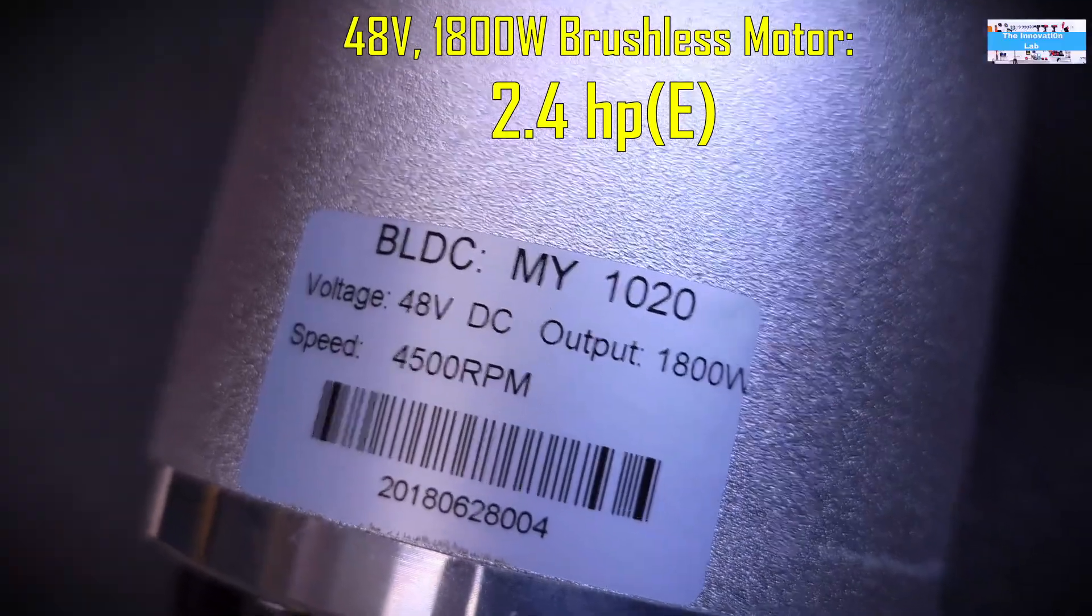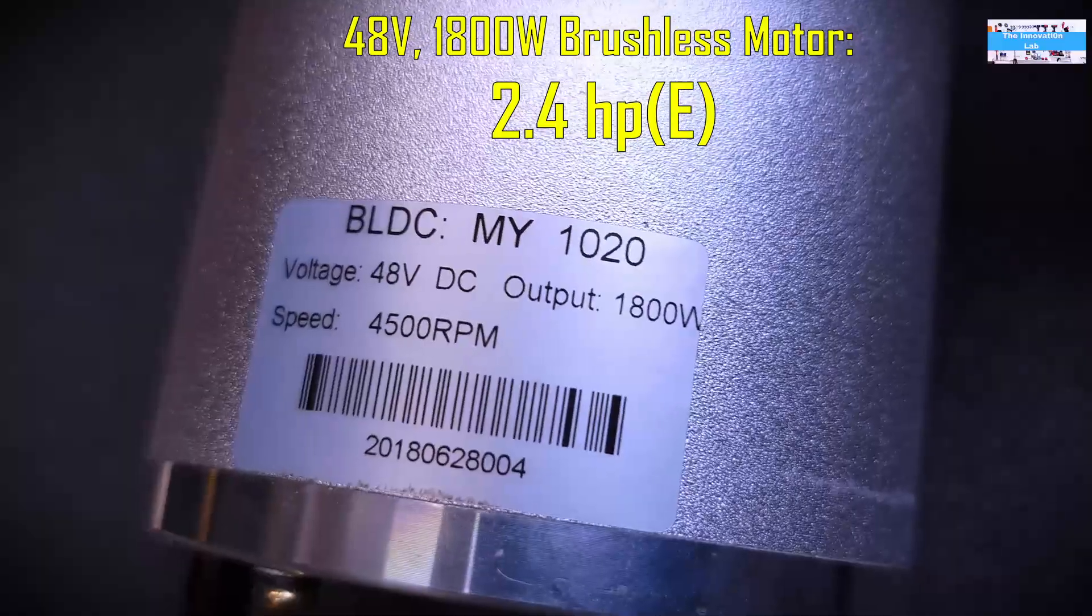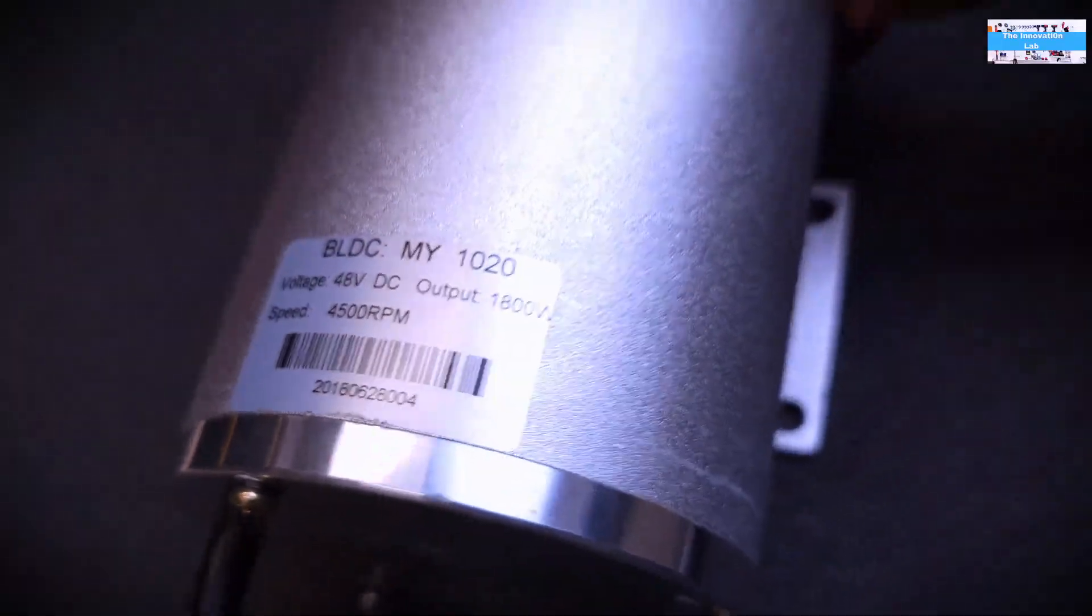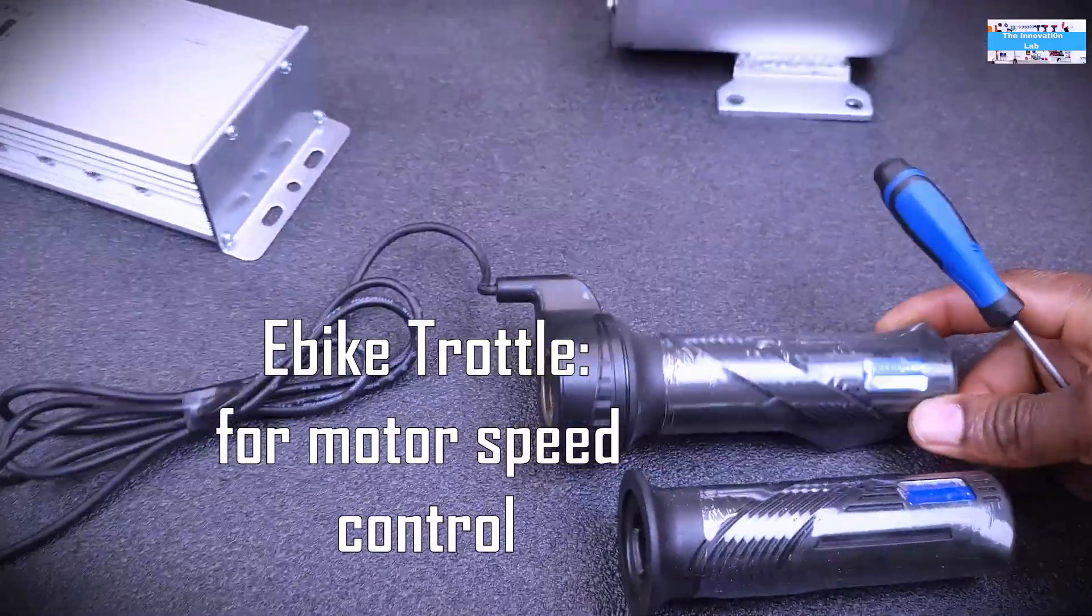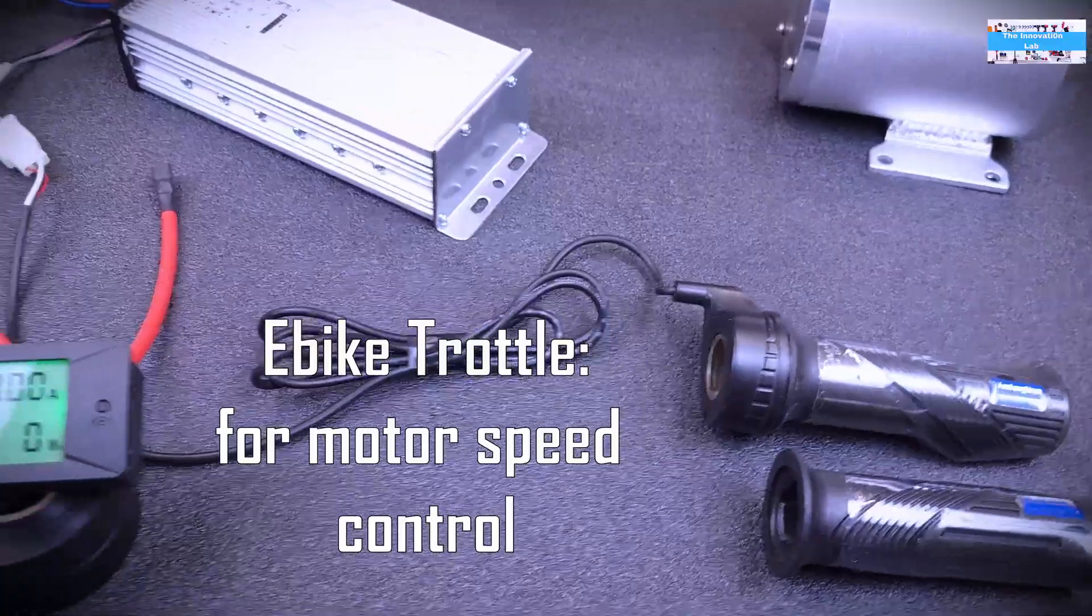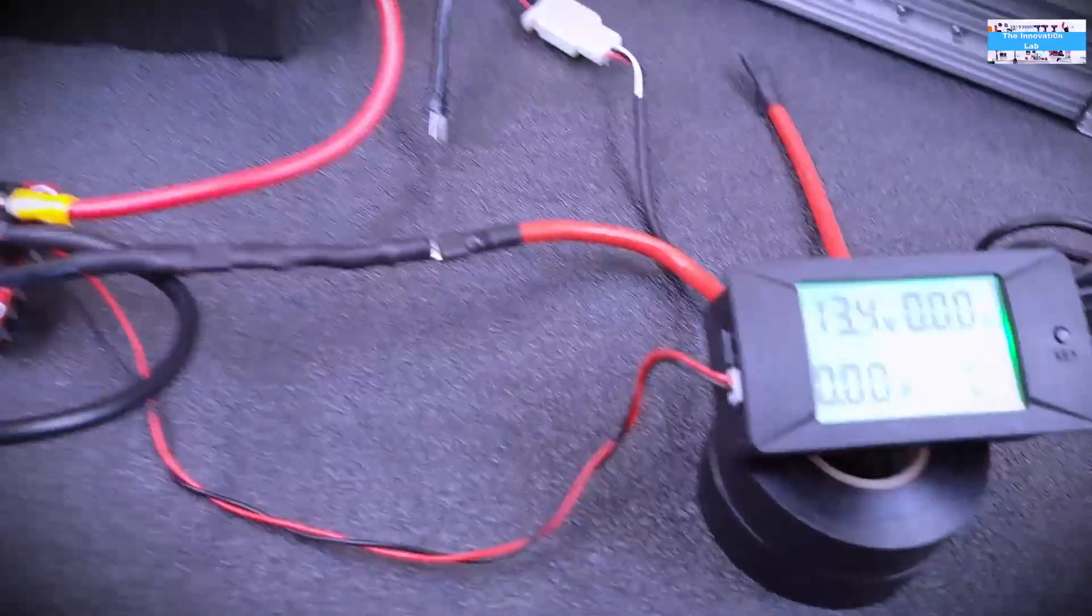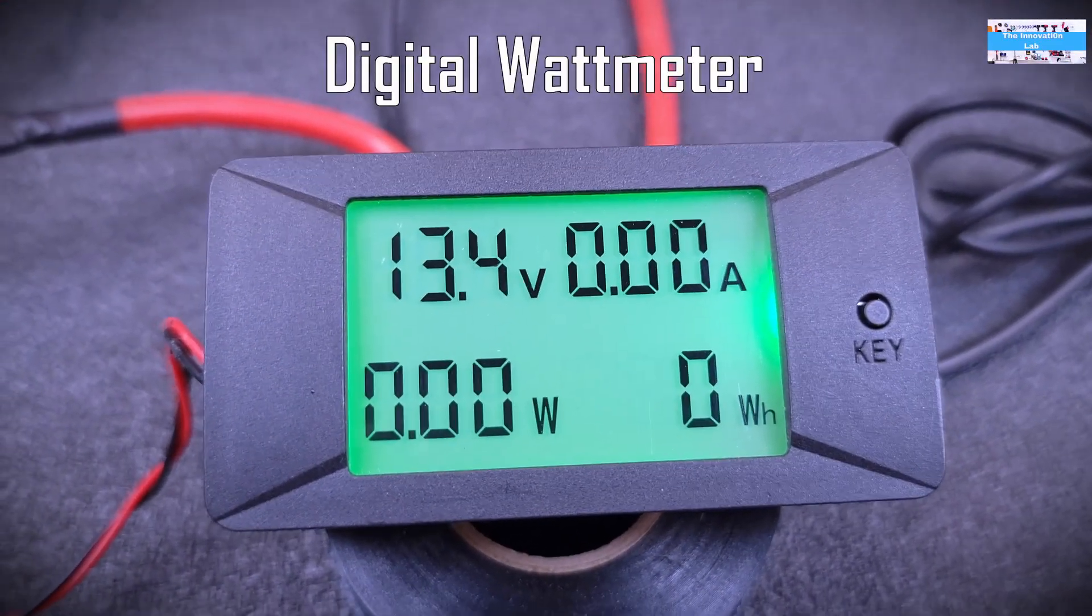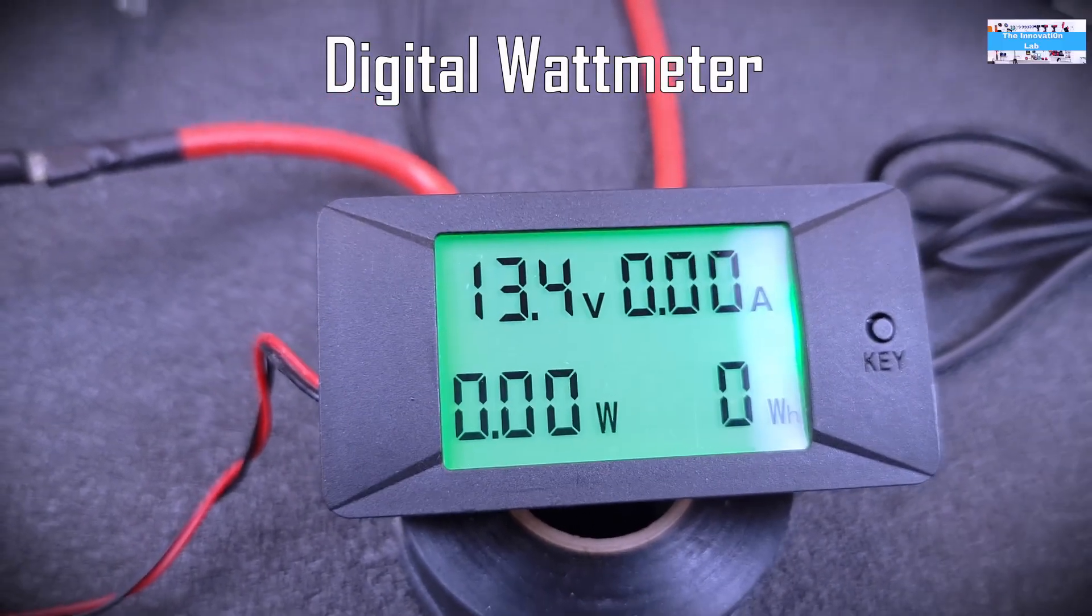Then from there we're going to use that to drive this brushless DC motor which is rated for 48 volts and 1800 watts, and this motor can go up to a speed of 4500 rpm. Over here is a throttle that we're going to use. We also have a digital power meter that we're going to be using to keep an eye on the power draw going into the motor.